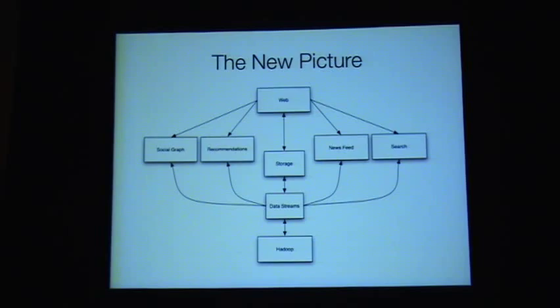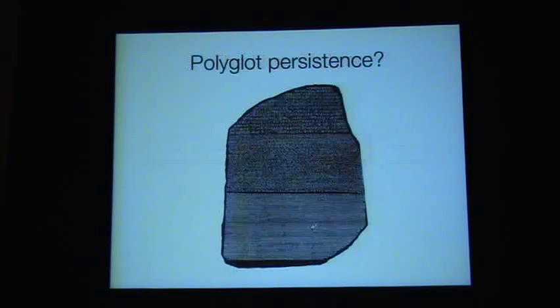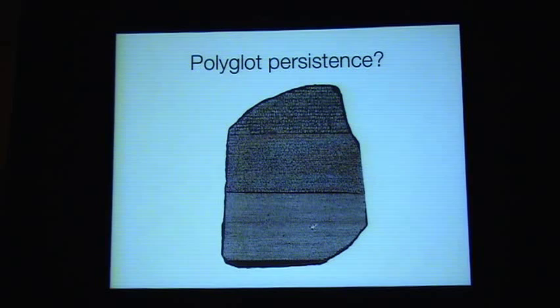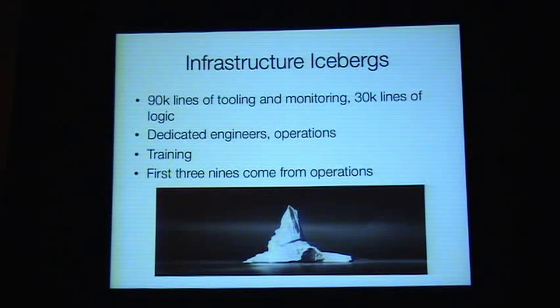A lot of challenges come out of that specialization. The question is which of these things should you actually have? Do you need a specialized graph system, or can a good storage system handle that? The phrase I've heard for this is polyglot persistence — just store this one in Redis and this one in HBase. But I think that's probably the wrong way to think about it when you're trying to build this, because each one of these systems is a massive overhead.